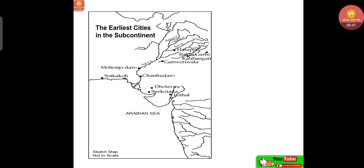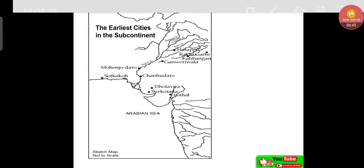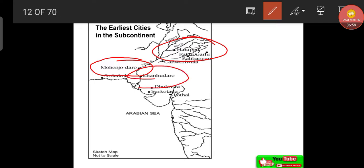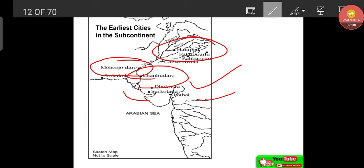Now let's look at the map of the earliest cities in the subcontinent. Key Harappan sites include Harappa, Mohenjo Daro in Pakistan, Chanhudaro, Dholavira, Surkhota, and Lothal. Harappa and Mohenjo Daro are the most important sites.